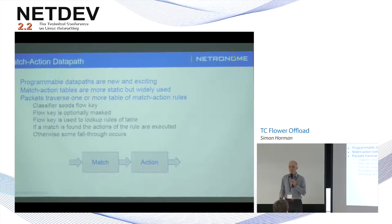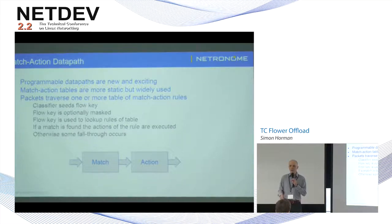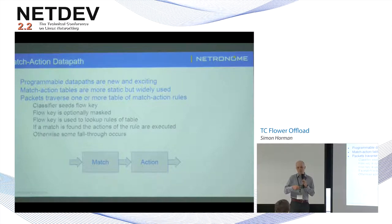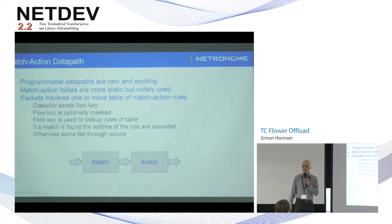What is a match-action data path? Your packet comes into the system and some kind of classification takes place. Typically this involves code running through the packet, examining headers, populating some kind of key structure. It may also take into account metadata attached to the packet — for example, the input port, or tunnel outer header information if the packet was previously tunneled and decapsulated.